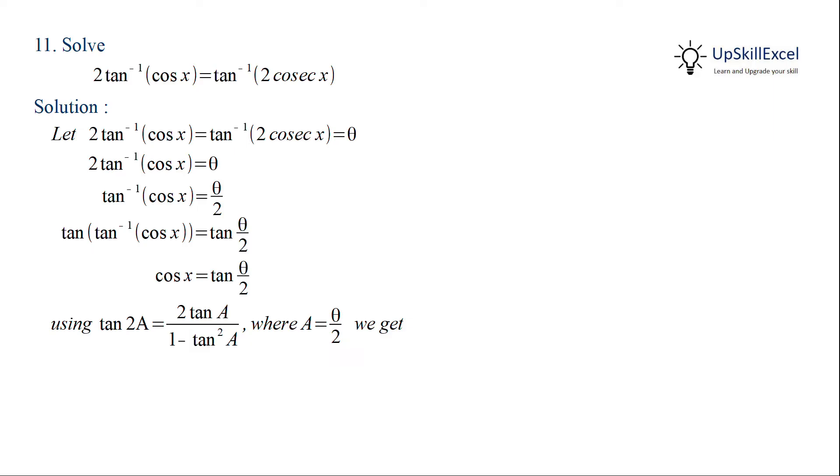Now we can use the tan 2A formula where A is equal to theta by 2 to get tan theta is equal to 2 cos x by 1 minus cos square x, which is equal to 2 cos x by sine square x.